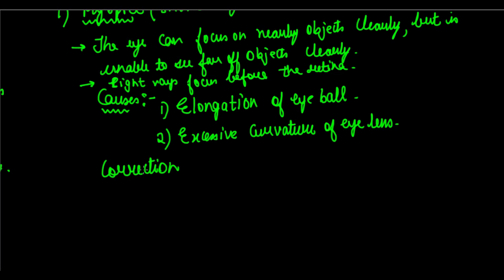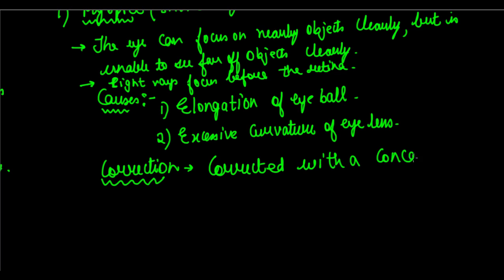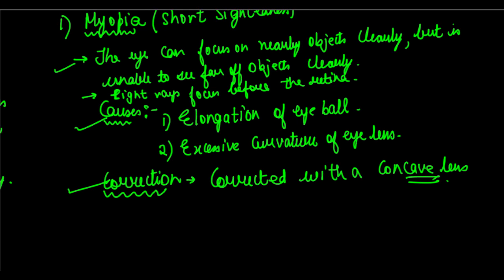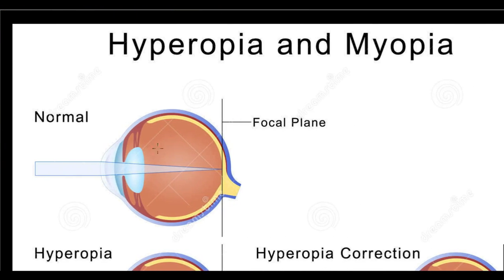The correction for myopia is done using a concave lens. Using a concave lens, you can correct myopia. So to summarize: in myopia you can focus on nearby objects clearly but are unable to see far-off objects; the light rays focus before the retina; causes are elongation of the eyeball and excessive curvature of the eye lens; and it is corrected with a concave lens.